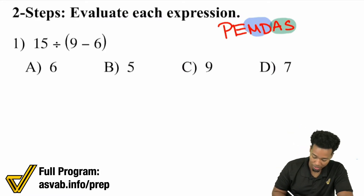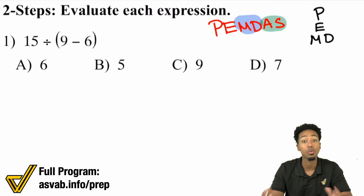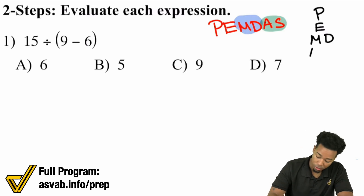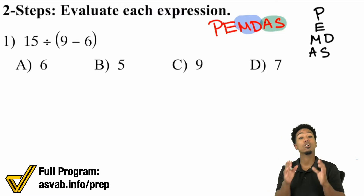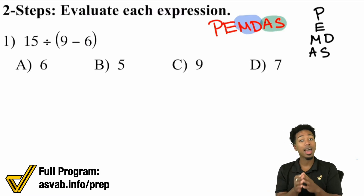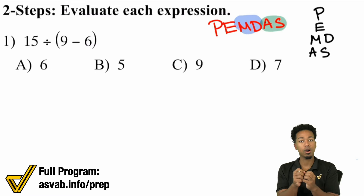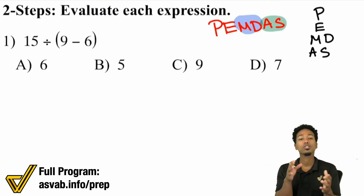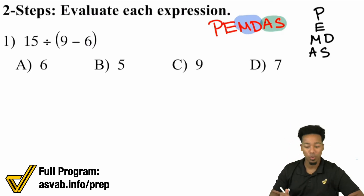Another better way to write PEMDAS is: please excuse, but then M and D — multiplication and division — on the same line, because it's whichever one comes first. Then addition and subtraction, whichever comes first. They are the same operation. Adding and subtracting is just moving right and moving left — it's just movement. Multiplication and division is getting bigger, getting smaller, changing size. So, whichever comes first.